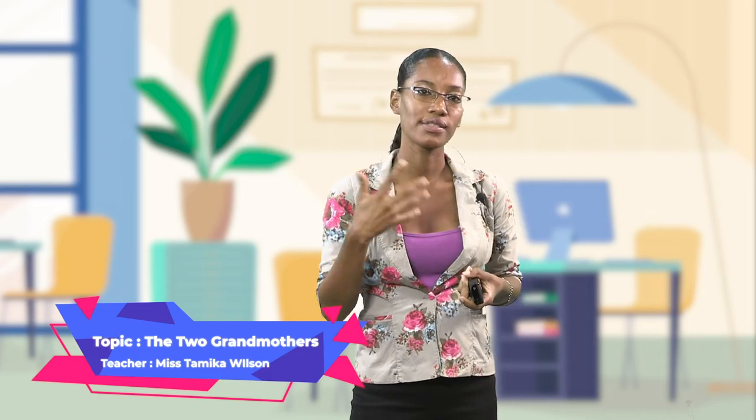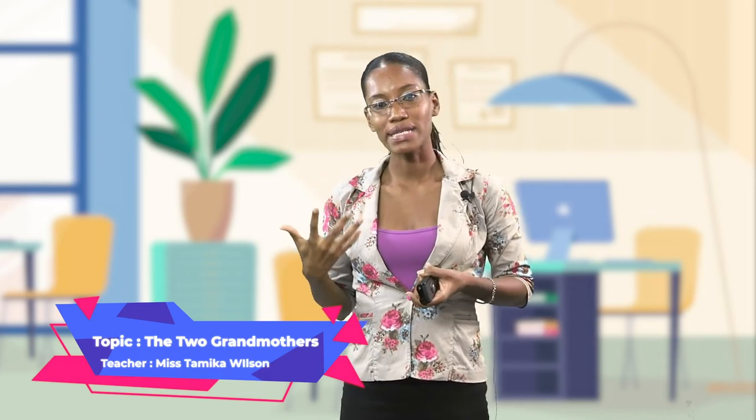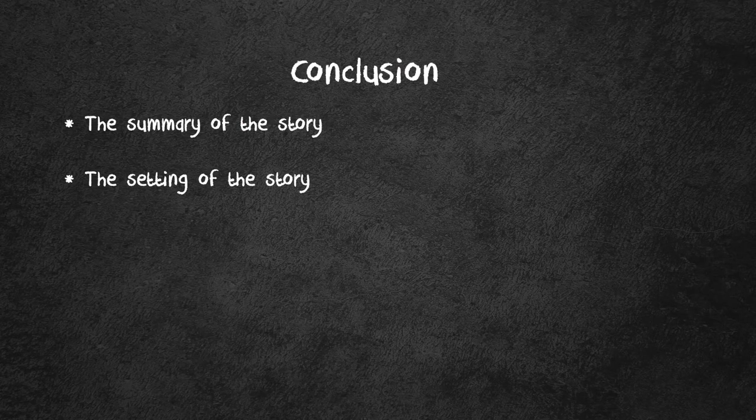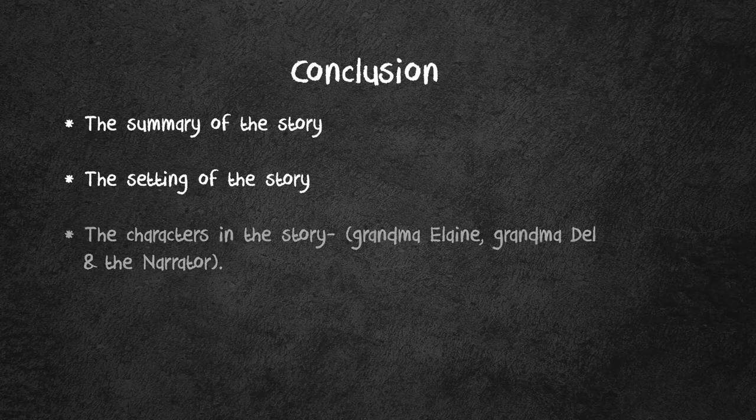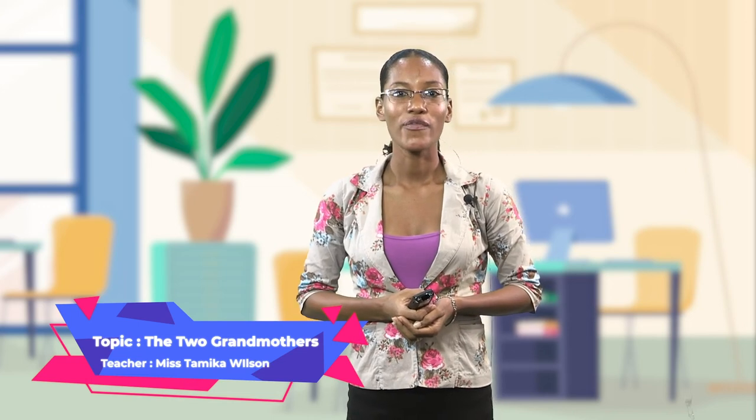So she has grown and evolved — she now spends more time with Grandma Elaine as against Grandma Del. That brings us to the end of today's lesson. Today, we looked at the summary of the story, the setting of the story, and the major characters: Grandma Elaine, Grandma Del, and the narrator in The Two Grandmothers by Olive Senior. Okay, boys and girls, that has brought us to the end of today's lesson for English literature. Continue to be good students, and I will see you in the next class.